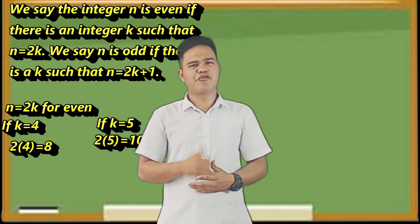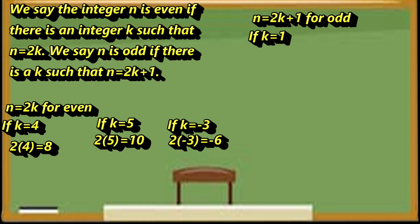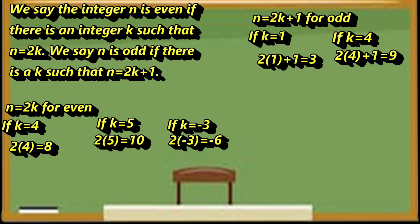But how about the formula for odd integers, where N is odd and N equals 2K plus 1? If K equals 1, then 2 times 1 plus 1 equals 3. If K equals 4, then 2 times 4 plus 1 equals 9. If K equals negative 3, then 2 times negative 3 plus 1 equals negative 5.